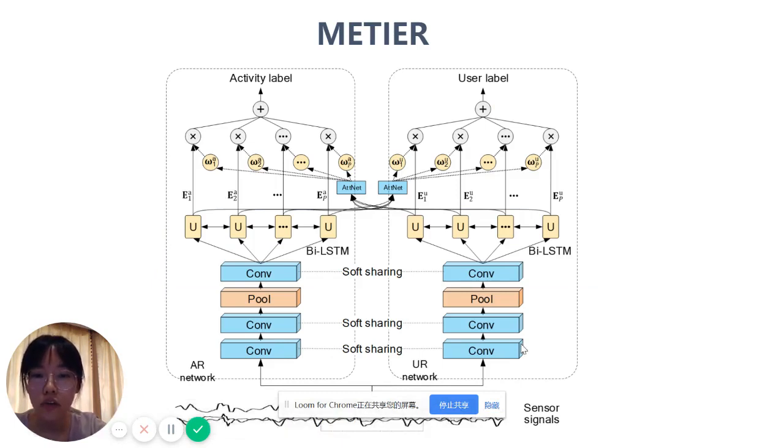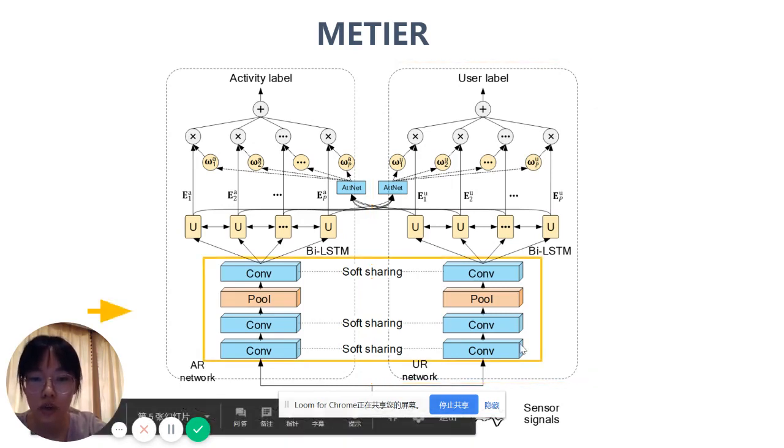This is the overall framework of METIER. It contains two networks: activity recognition and user recognition. There are interactions between them. In each network, the time window first goes through a convolutional neural network,